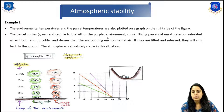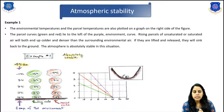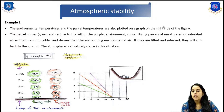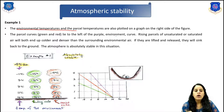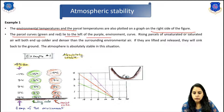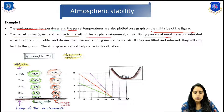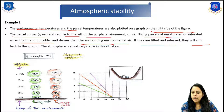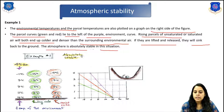Now an example of atmospheric stability is given. In the first example, the environmental lapse rate is assumed to be 4 degrees Celsius per kilometer, shown in the left column of the figure. The next two columns show the temperature inside a rising parcel of unsaturated air at 10 degrees Celsius per kilometer and saturated air at 6 degrees Celsius per kilometer. Rising parcels of both unsaturated and saturated air will end up cooler and denser than the surrounding environment. If lifted and released, they will sink back to the ground — the atmosphere is absolutely stable in this condition.